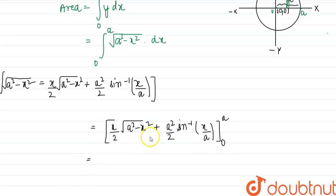Now placing the limits, this will be a/2. a² - a² will be 0, so this whole will be 0. This will be sin⁻¹(a/a), that is 1. That is (a²/2)sin⁻¹(1). At 0, this will be 0.